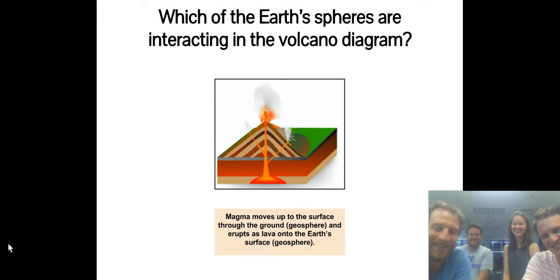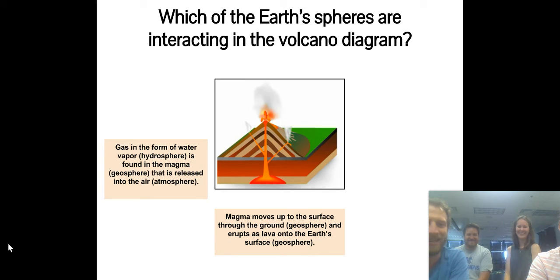So if you can take a look, right at the beginning, magma moves up to the surface through the ground, the geosphere, and erupts lava onto the Earth's surface. So it's geosphere again. So you're interacting within the same sphere, which is totally fine. And you're also getting gas that's coming out as well. Gas in the form of water is going to be from the hydrosphere. And it's found in the magma, so part of the geosphere, and it's released out in the atmosphere.